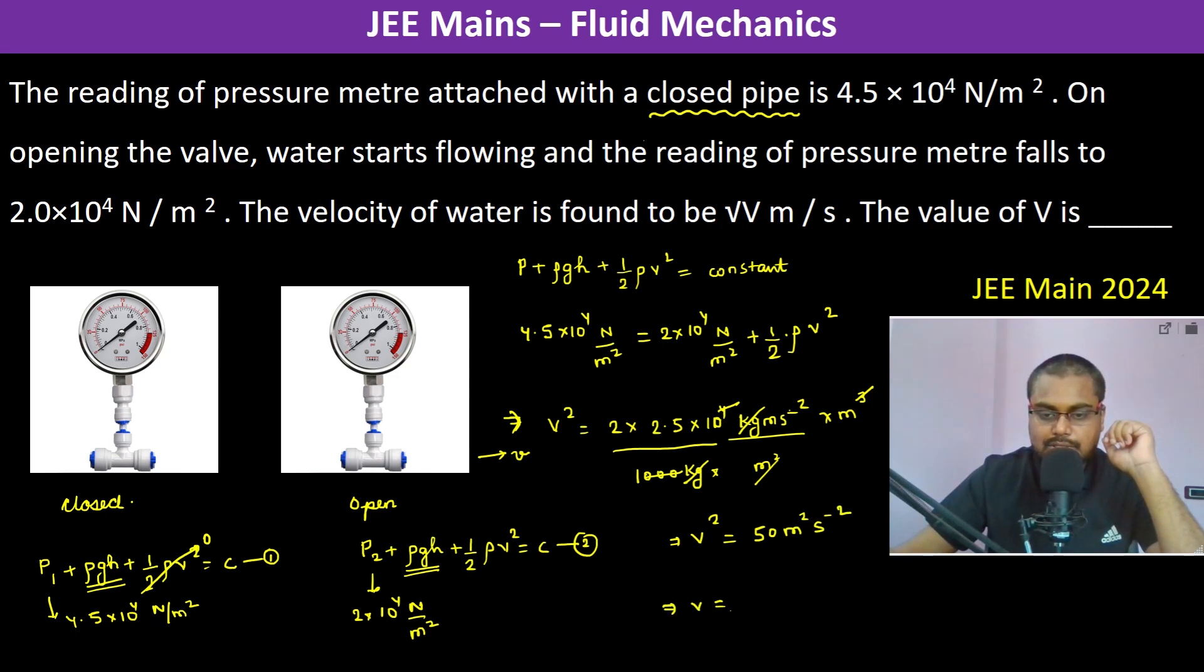Therefore, V is root 50 meter per second. So therefore, here now the capital V actually becomes 50. So 50 is the answer. Thank you.